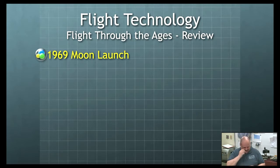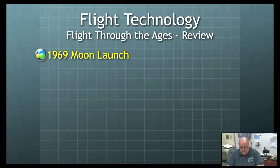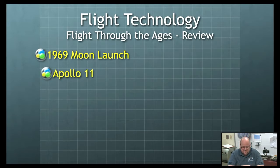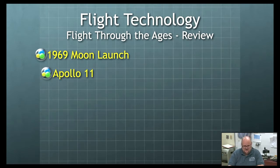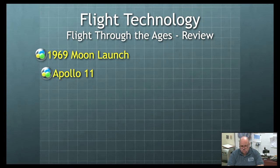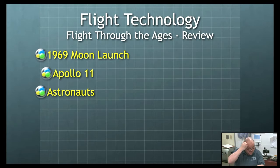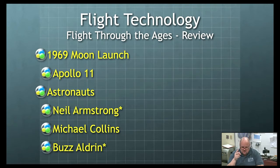Now we get into the moon launch, 1969 — huge. What rocket took us into space? It's Apollo 11. Apollo 11 got us to the moon, with three men in the capsule. Now, from 1961 with Alan Shepard to the Apollo missions in 1969, there were many different style rockets along the way. Apollo 11 is what got us to the moon. The three astronauts were Neil Armstrong, Michael Collins, and Buzz Aldrin.